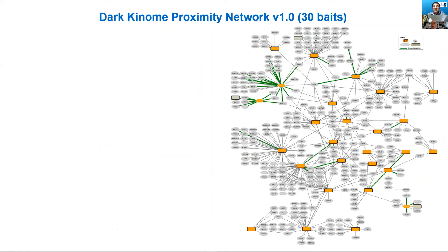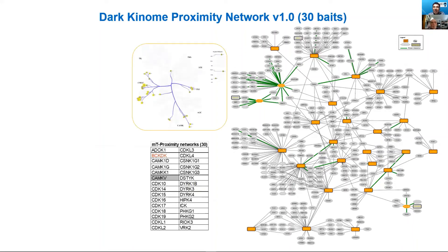We have just finished our first initial round of generating dark kinome proximity networks for about 30 baits. In this network snapshot, the orange nodes are the actual baits, the other nodes are prey proteins, and the green edges represent known database interactions overlaid on top of our interaction networks. We have data for about 30 dark kinases, largely represented by the CDK family.